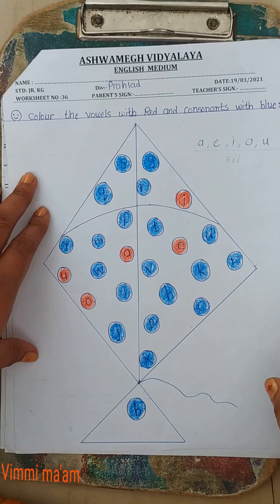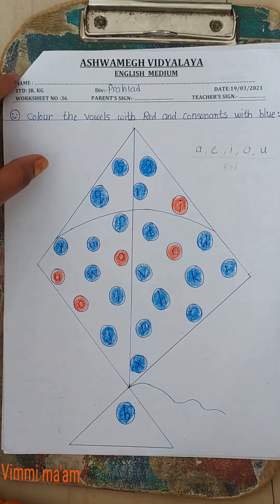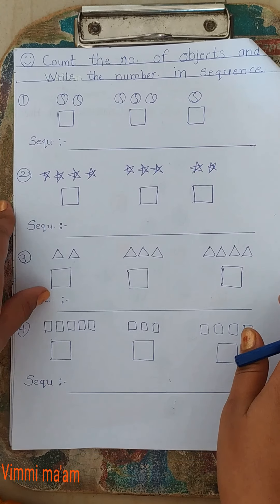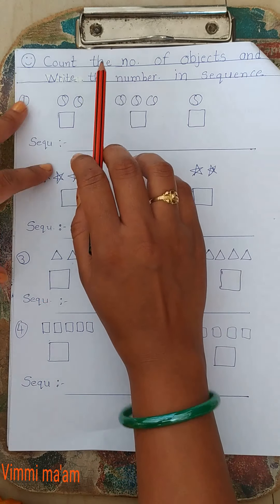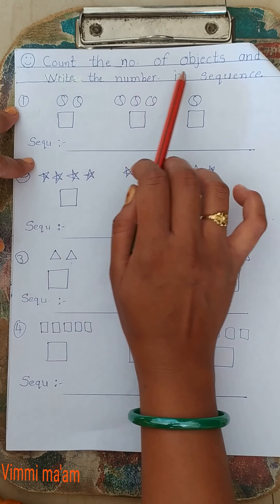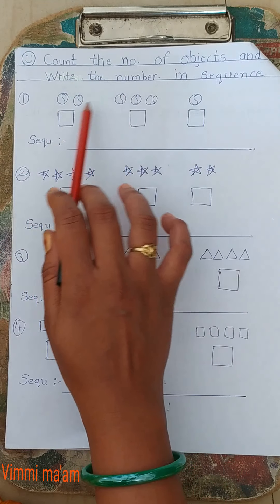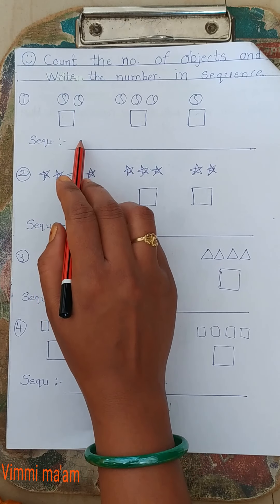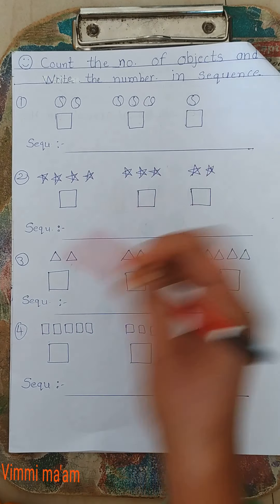Complete. Now turn this page. Now second activity — which activity is given here? Count the number of objects and write the number in sequence. Yeh haa pe jo object hai, woho hume count karke yeh haa pe box mein likhna hai. Phir hume woh usko sequence mein yeh haa pe likhna hai. Okay?